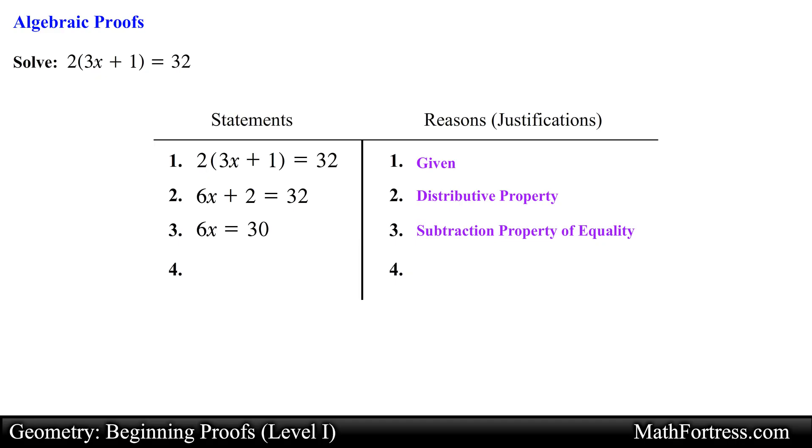The last step is to divide both sides of the equation by 6. Doing that we obtain x equals 5. For our justification we write division property of equality and not divide by 6.